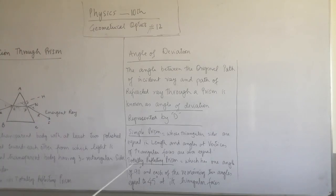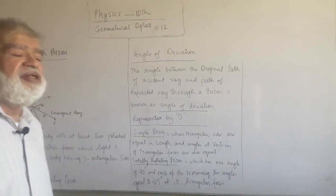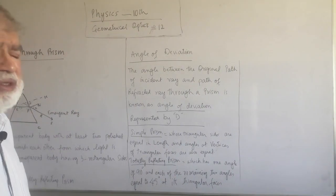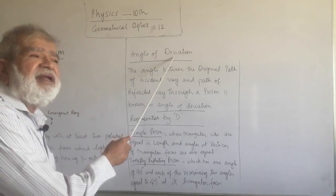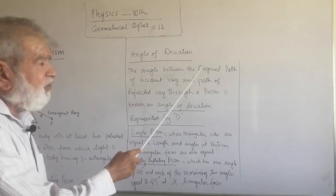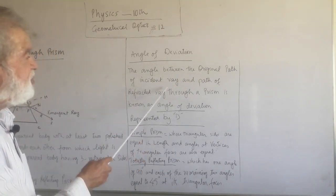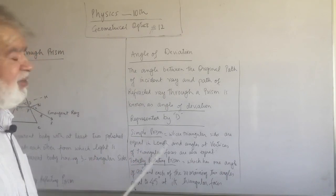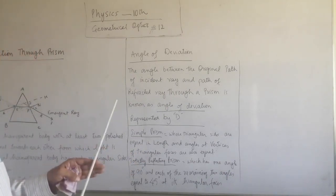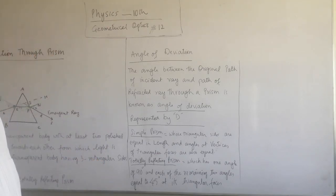What is the angle of deviation that I talked about? By what angle has the ray of light deviated from its path? What is the angle through which the ray of light has deviated? The angle between the original path of incident ray and the path of refracted ray - the angle between incident ray and refracted ray is known as angle of deviation. And this is represented by D in the diagram.